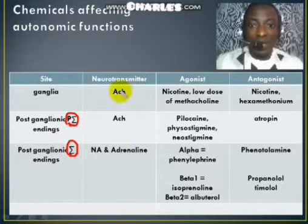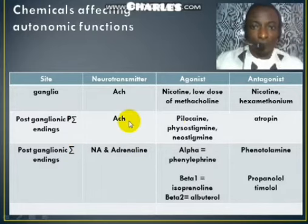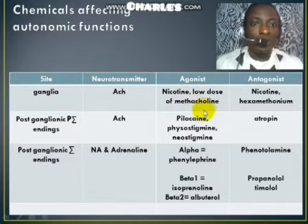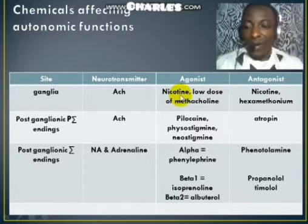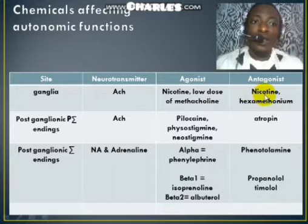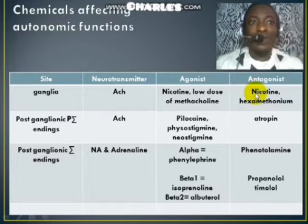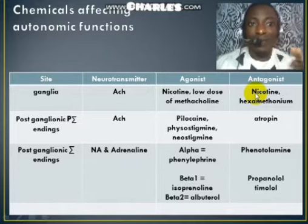These are the transmitters that affect the autonomic receptors. For the ganglia, the neurotransmitter used is acetylcholine. Nicotine and low doses of methacholine can activate the nicotinic receptors, whereas a very high dose of nicotine would inhibit or deactivate the nicotinic receptors. When the nicotinic receptors are deactivated, acetylcholine cannot act on those receptors and acetylcholine release would be inhibited.